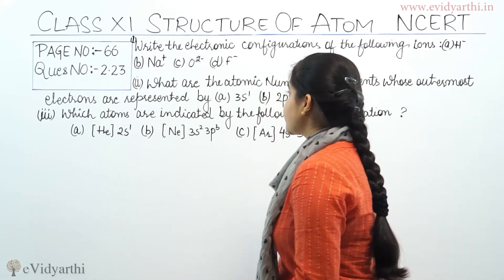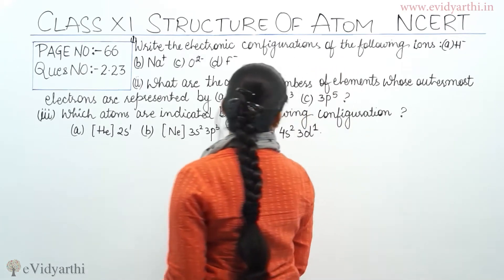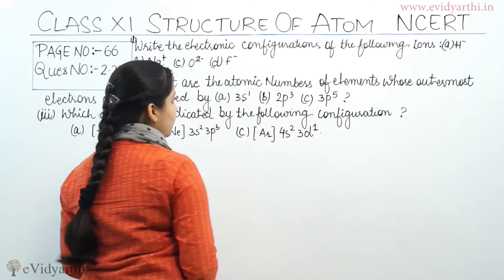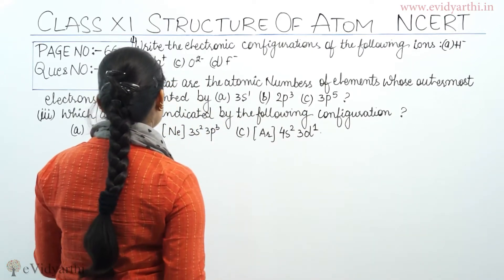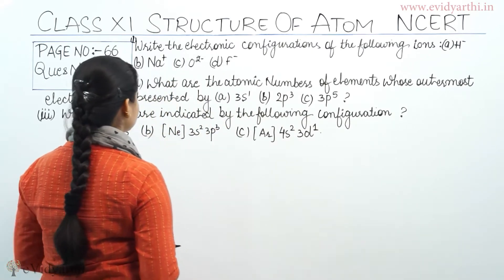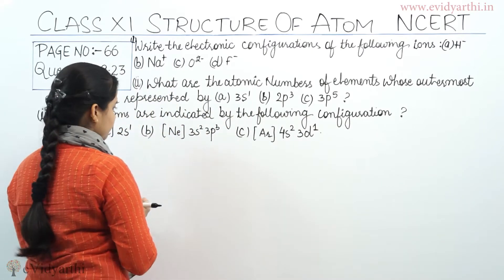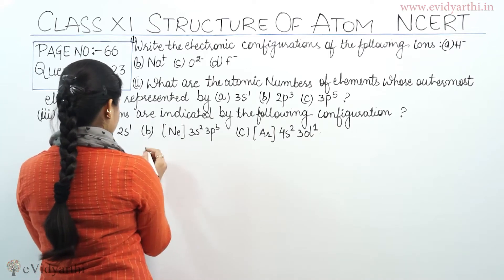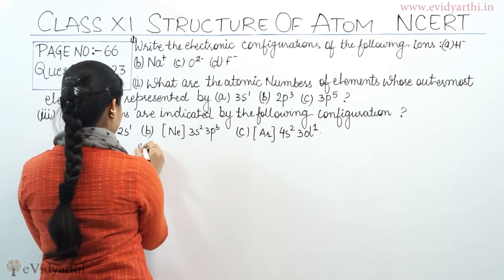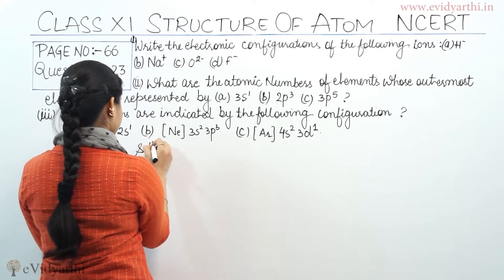Question: write the electronic configuration of the following ions — A) H negative, B) Na positive, C) O2 negative, and D) F negative. So first part of this question.